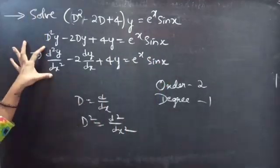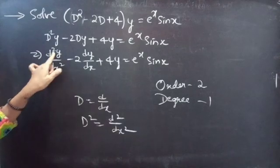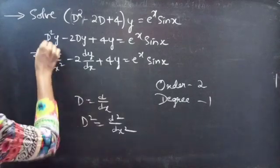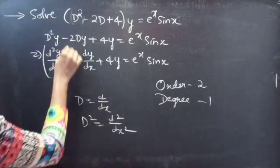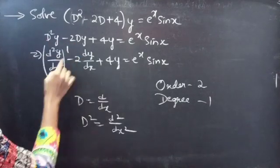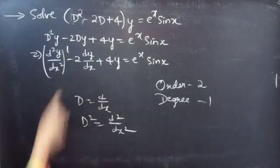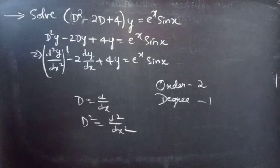Here, d²y/dx² is the highest derivative, so order will be 2. And the highest power of the highest derivative is the degree. Degree is 1. Now, coming to the problem.